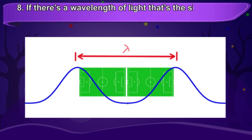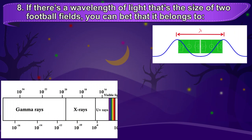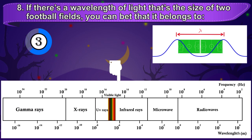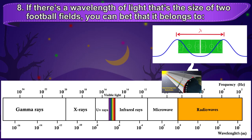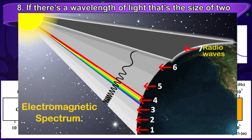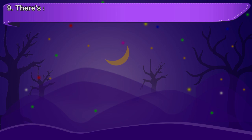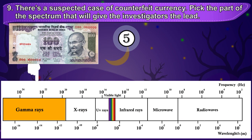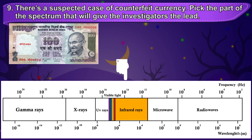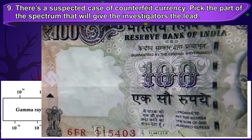If there's a wavelength of light that's the size of two football fields, you can bet it belongs to radio waves. These waves have the highest wavelength, and these wavelengths can range from a few meters to many kilometers. There's a suspected case of counterfeit currency — pick the part of the spectrum that will give the investigators the lead. The correct answer is the UV part of the spectrum. Currency notes have something called a UV mark, which is evident only under UV light.